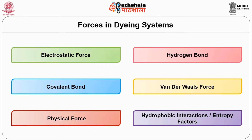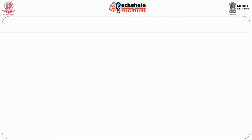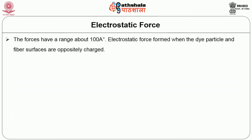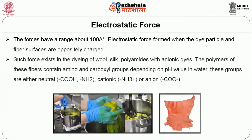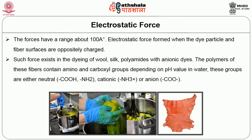Any of these factors may be involved with respect to the dye and fiber molecule arrangements. Electrostatic forces have a range of around 100 Angstroms. Electrostatic forces are formed when the dye particle and fiber surfaces are oppositely charged. Such forces exist in the dyeing of wool, silk, and polyamides with anionic dyes. The polymers of these fibers contain amino and carboxyl groups which, depending upon the pH value in water, are either neutral, cationic, or anionic in nature.